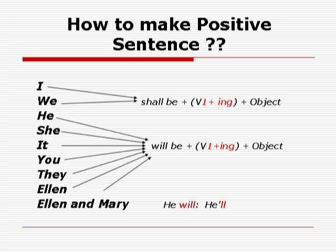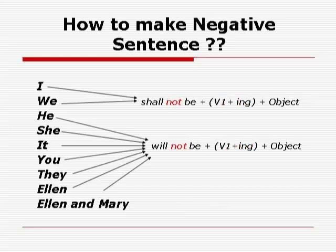You can make sentences: I will be playing cricket. We will be playing cricket. He will be playing cricket. She will be playing cricket. It will be playing cricket. You can use contractions: You'll be playing cricket. They'll be playing cricket. Alan will be playing cricket. Alan and Mary will be playing cricket.